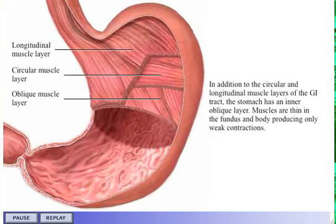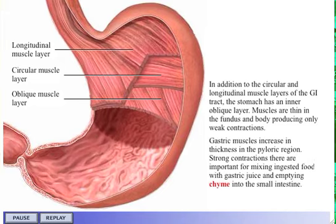In addition to the circular and longitudinal muscle layers of the GI tract, the stomach has an inner oblique layer. Muscles are thin in the fundus and body and produce only weak contractions. Gastric muscles increase in thickness in the pyloric region, where strong contractions are important for mixing ingested food with gastric juice and emptying chyme into the small intestine.